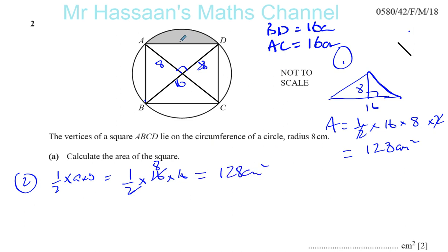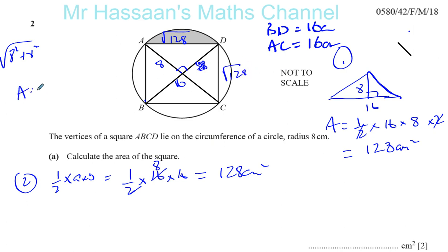Another way is to find the length of one of the sides, like AD. Since the half-diagonals are 8 and 8 meeting at a right angle, by Pythagoras, AD equals the square root of 8 squared plus 8 squared, which is the square root of 128. The area is then the square root of 128 times the square root of 128, which gives you 128.